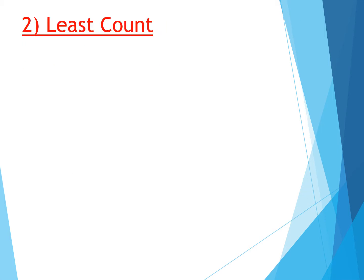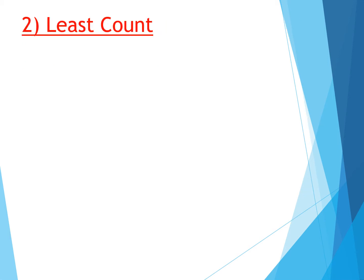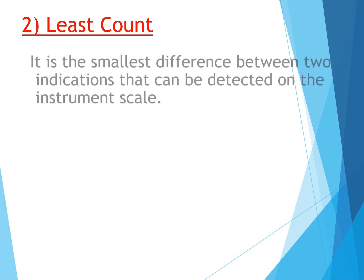The next definition is least count. It is the smallest difference between two indications that can be detected on the instrument scale — in other words, the smallest division I can measure on a given instrument. For example, on a common 15 cm scale, the smallest reading I can measure is 1 mm, or 0.1 cm. That is the least count.